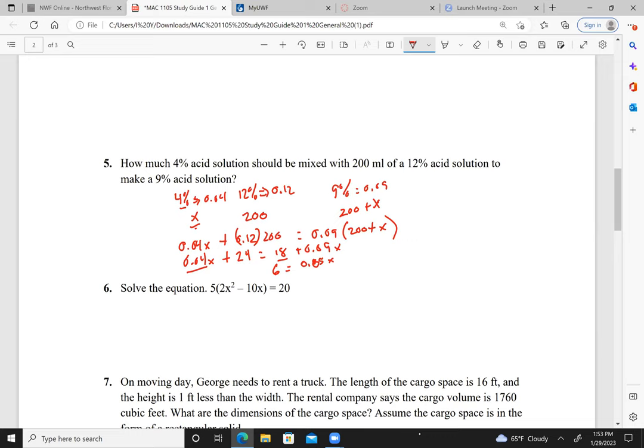Subtract the 18 equals 6. Divided by 0.05. And we get 120 equals x. So 120 milliliters. Okay, next step.